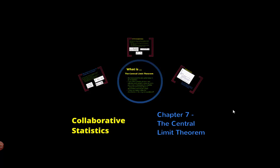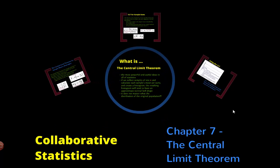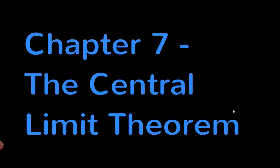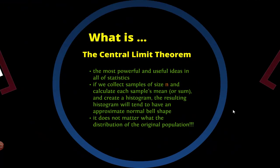Okay, welcome to Collaborative Statistics. This is Chapter 7, the Central Limit Theorem. We just learned in Chapter 6 about the normal curve, and this takes the concept one step further. As I said in Chapter 6, the normal distribution is the most important distribution.